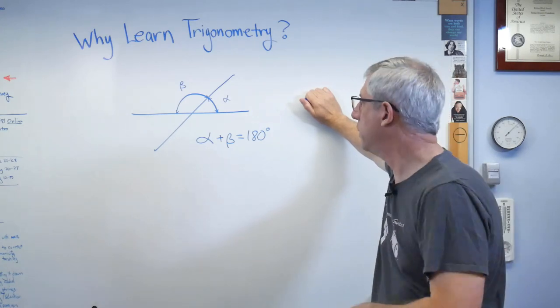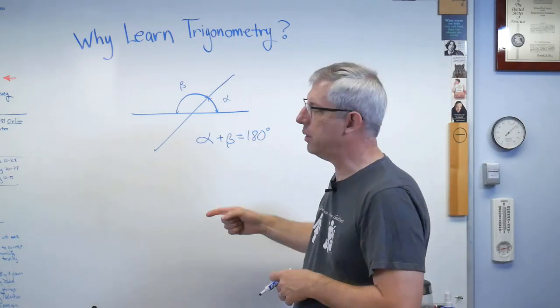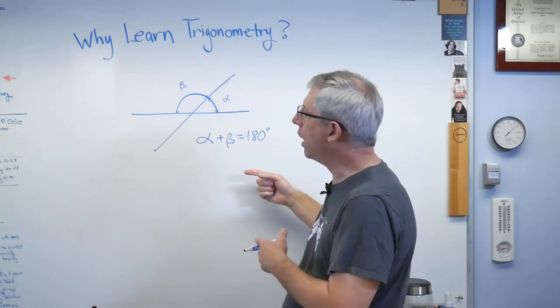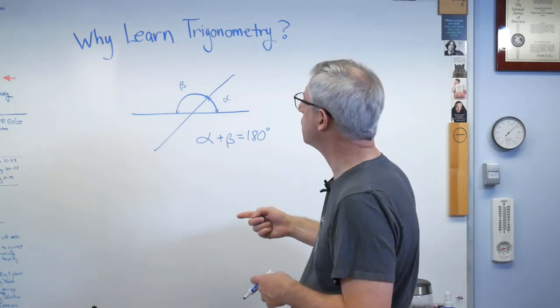Well, from this we can conclude alpha plus beta is 180 degrees. What do you do with this? Well, you can do a little with it. It's not useless by any means. But it's hard to, geometry isn't about making numbers come out. That's where trigonometry comes in.